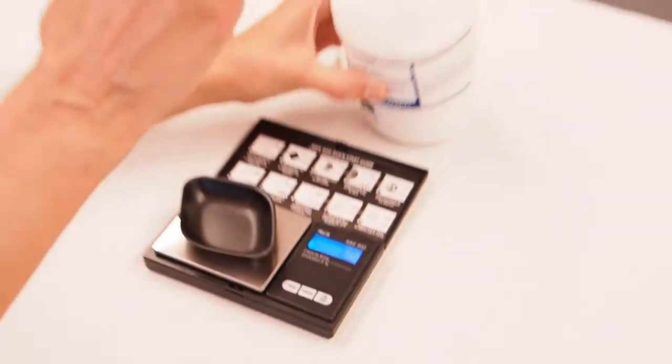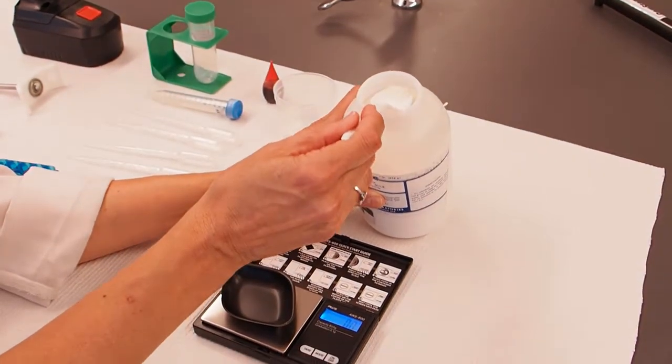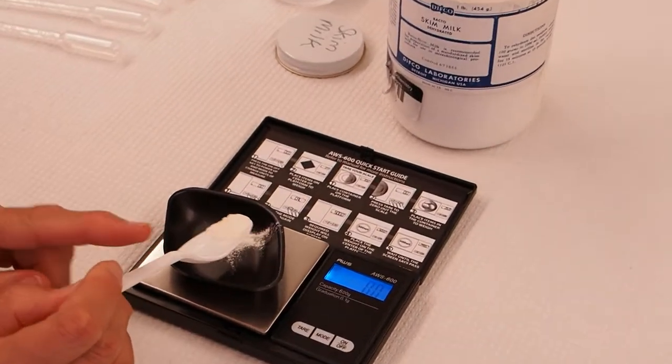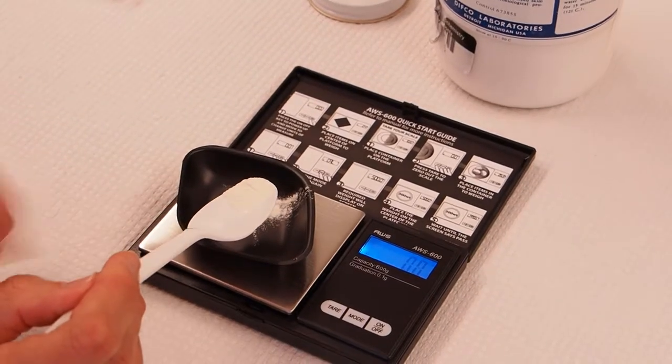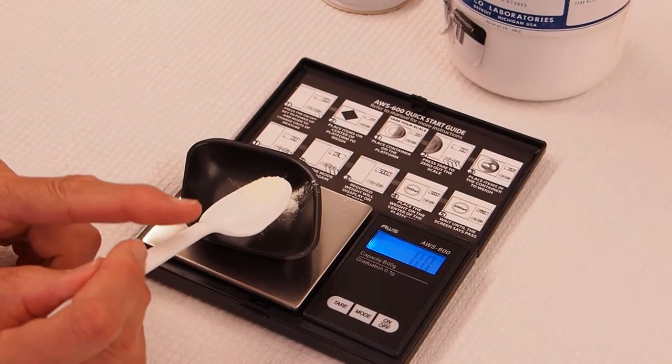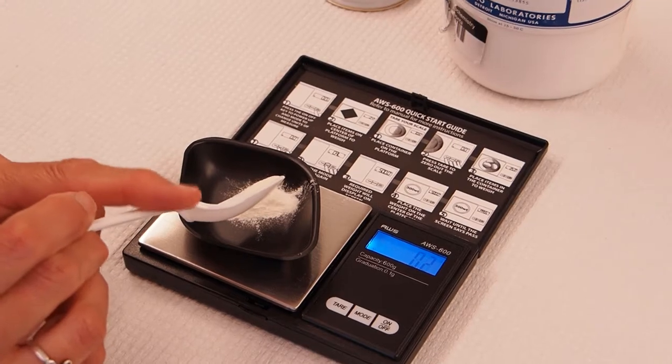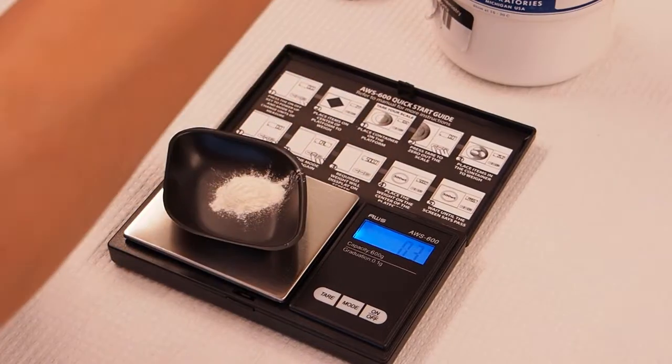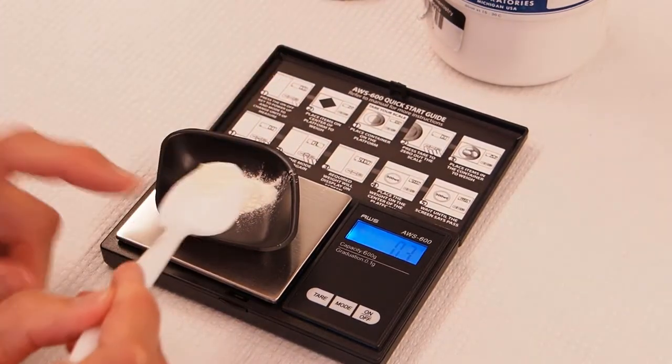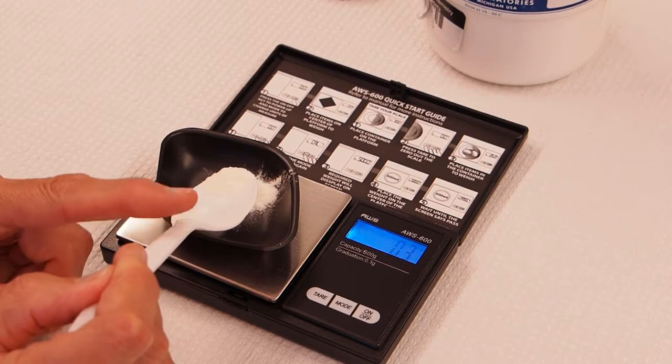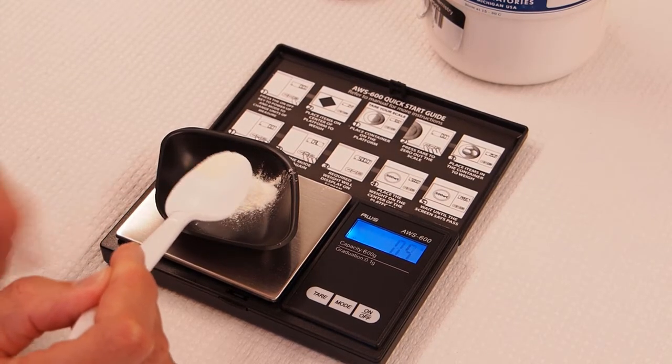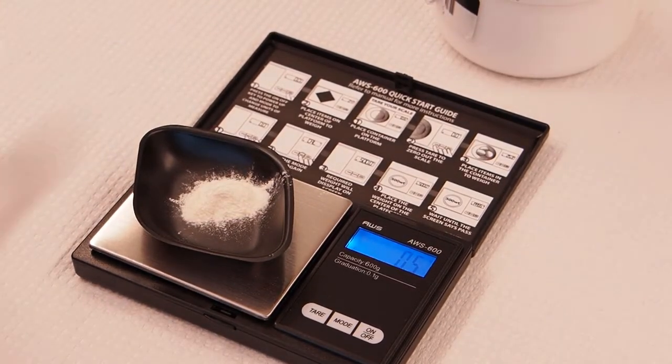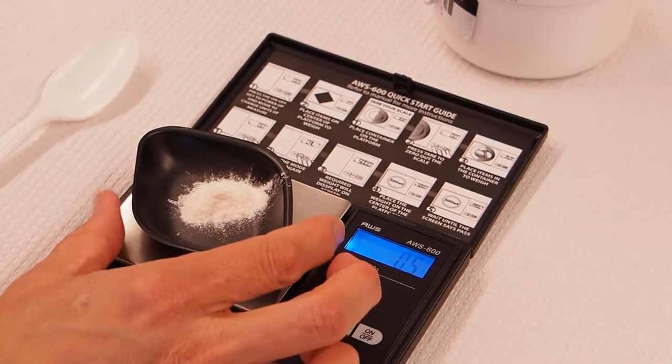We want one half gram, which is 0.5 grams, of milk powder. I'm going to tap my little spoon that has some powder on it until it reads 0.5. I don't want to dump it on there because I don't want to put too much of the chemical on there right away. I just want to do it slowly until I get the mass I want. And there I am, I am at 0.5 grams. I have the amount of milk powder that I want.